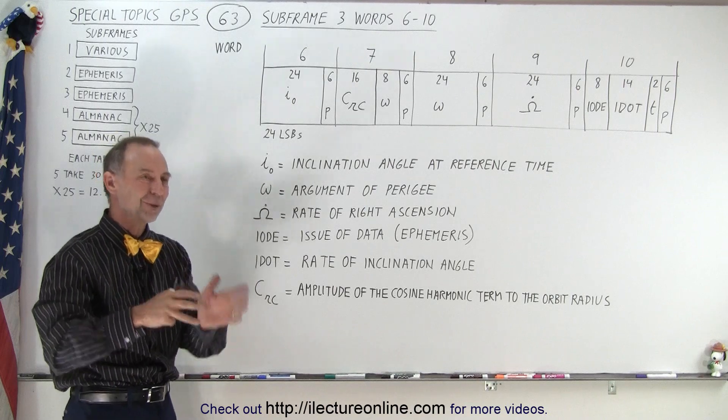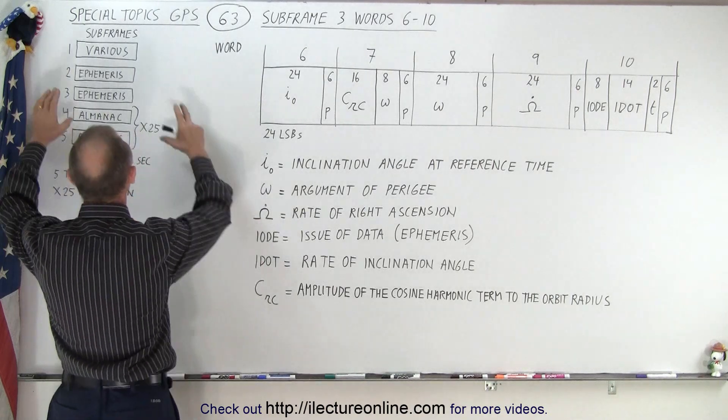So that's all the information you have in word 2 and word 3. So, I'm sorry, in subframe 2 and subframe 3. All of that contains the ephemeris data.